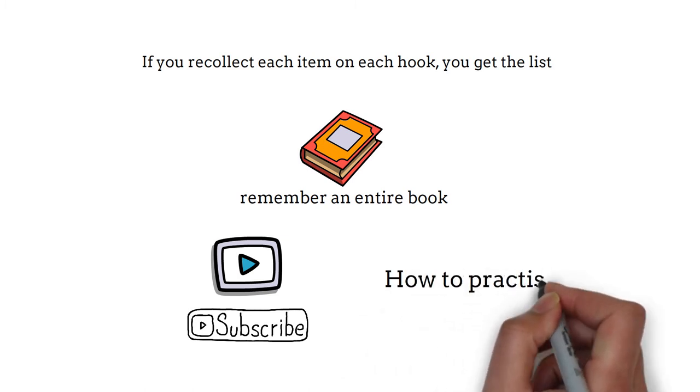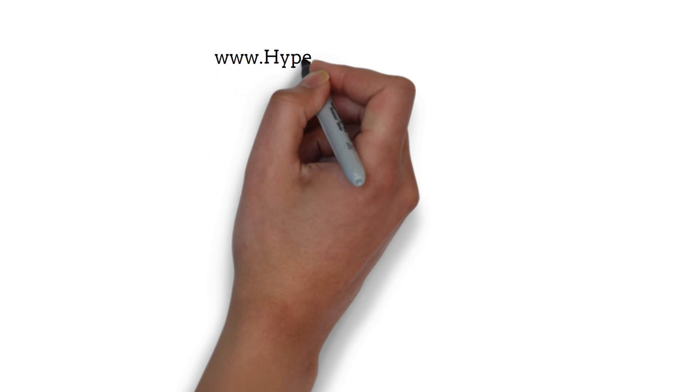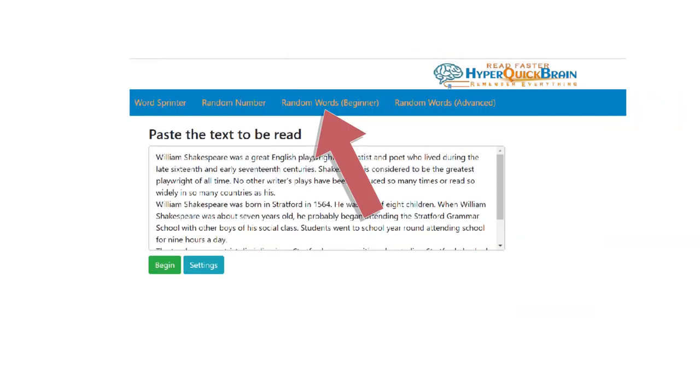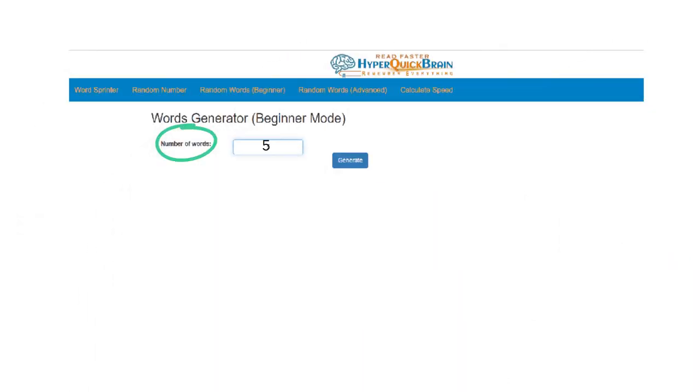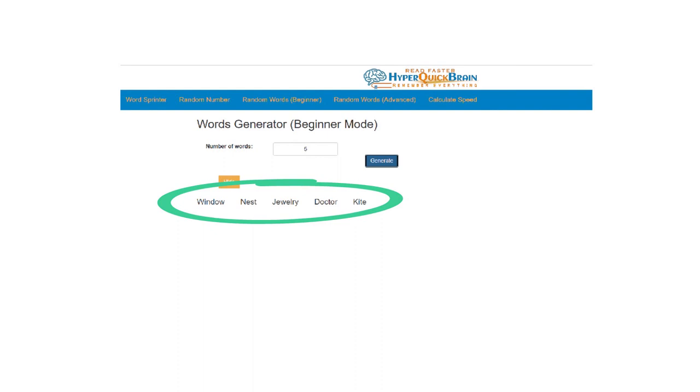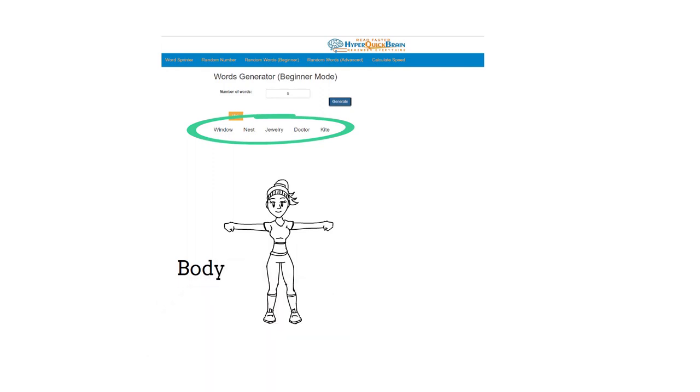So, how to practice? Go to the website www.hyperquickbrain.com. Click on Tools. Under Tools, click Random Words Beginner. Enter the number of words to 5. Click on Generate. This generates 5 words. Don't bother about timing at this point. Use your body to remember those 5 words.